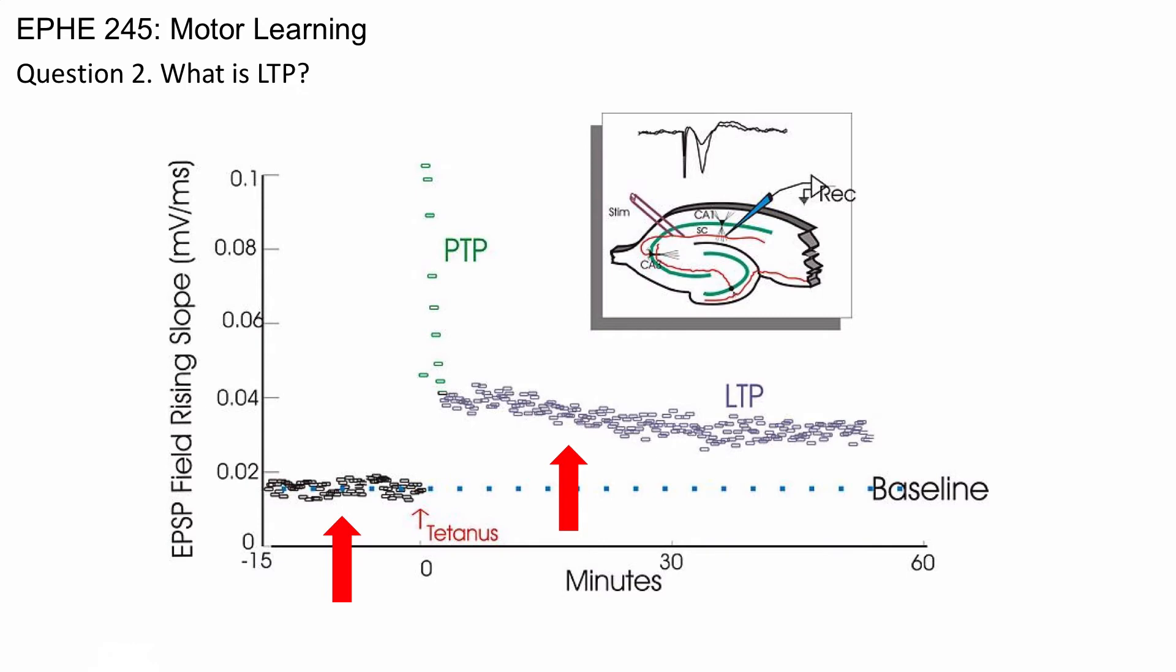The fact that the same input gets you a larger output—that is potentiation. The reason it is long-term is that in this case, you can see it lasts for up to 60 minutes. LTP has also been shown to last for weeks, and sometimes even months.